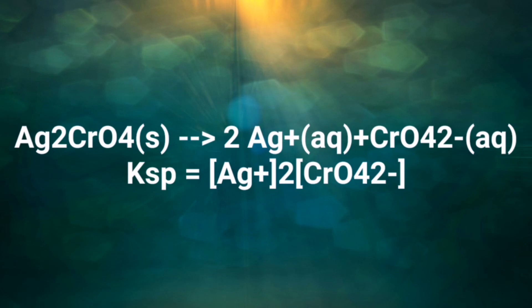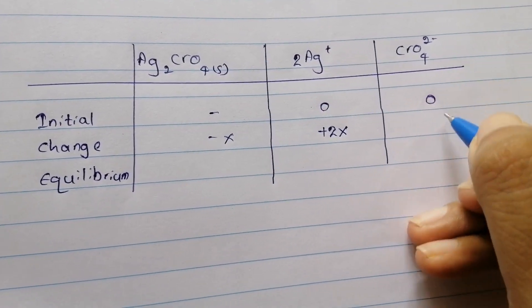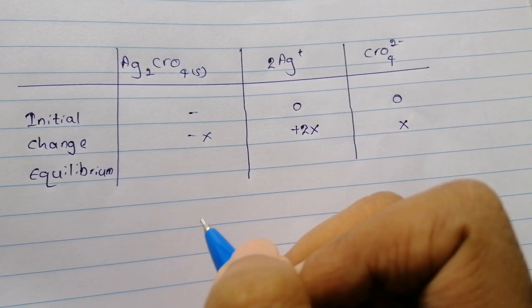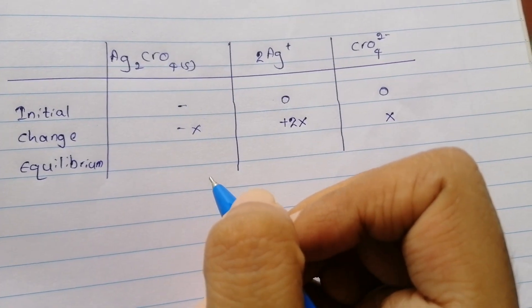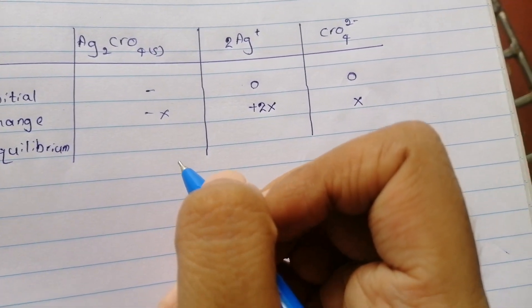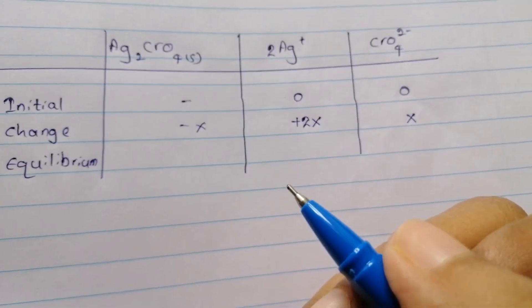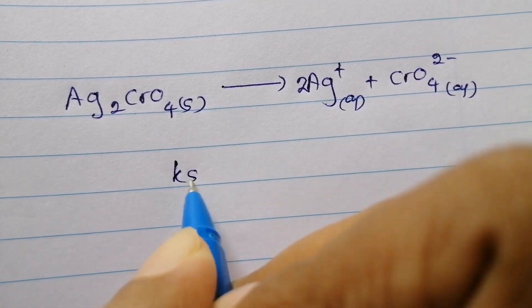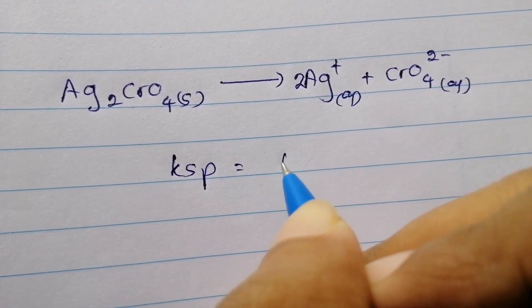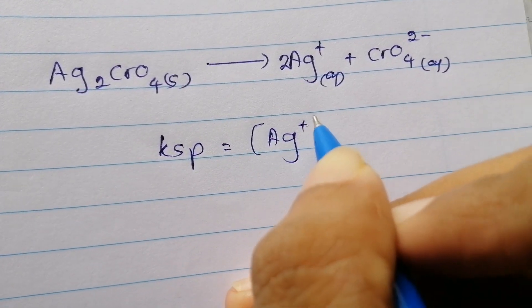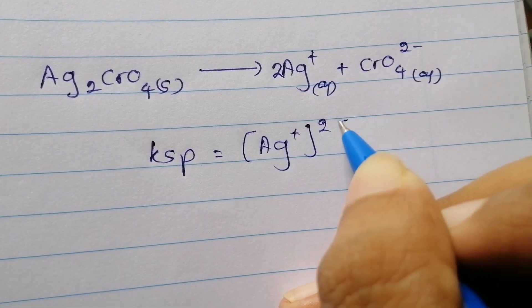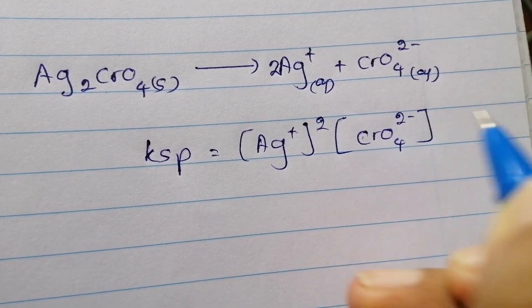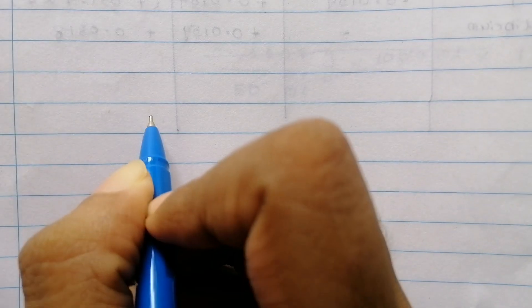The silver ions and chromate ions can be identified from the dissociation. The silver ion concentration is given as 2x and chromate as x. We substitute these into the Ksp equation. The Ksp value is 1.1 times 10 to the power of minus 12.